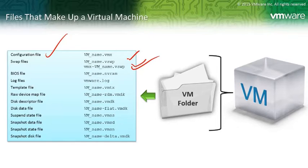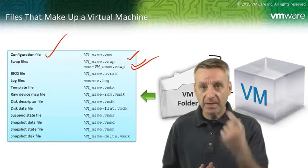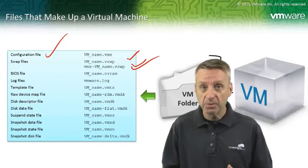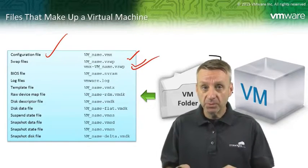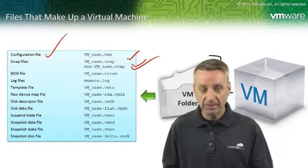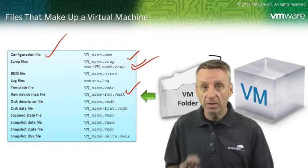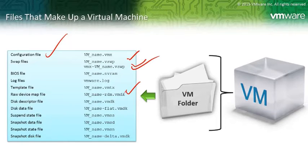There's also the VMTX extension, which is not a virtual machine file — it's the extension for a template. A template is nothing more than a virtual machine that can never be powered on. You can deploy virtual machines from it or convert it back to a virtual machine, but if you see the VMTX extension you know it's been flipped to a template. There's also the RDM — Raw Device Mapping — where we give a virtual machine access to a raw LUN, a raw disk that shows up in the VM as an actual disk drive. One use case is managing back-end storage systems where you need to manipulate that raw disk.